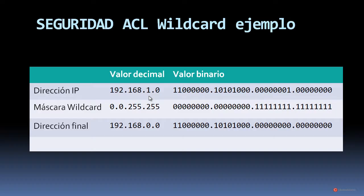Estos serían todos los posibles valores de direcciones IP que se revisarían. Después de haber estudiado Subnetting y VLSM esto deberíamos tenerlo claro. De todas formas, podéis buscar 'Aruma Digital VLSM' o 'Aruma Digital Direccionamiento IP' en YouTube y os van a aparecer unos cuantos vídeos que os lo van a terminar de aclarar.